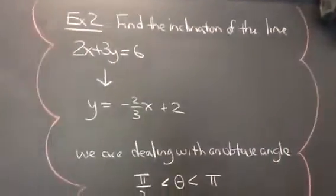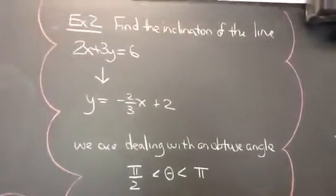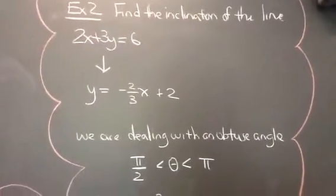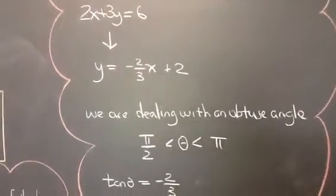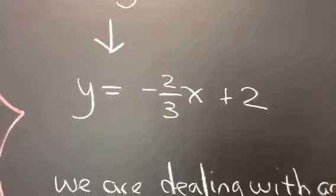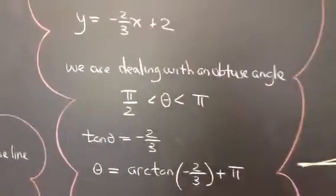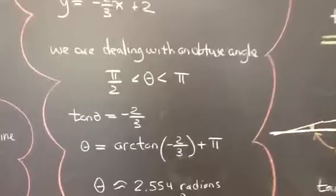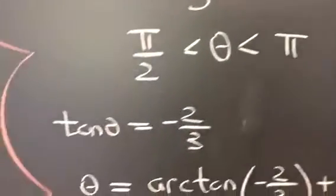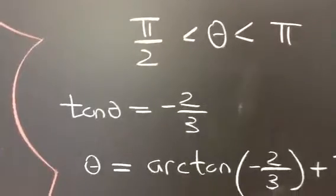Example 2. Find the inclination of the line 2x plus 3y equals 6. Once again, let's get this guy into slope intercept form. The slope is negative 2 thirds and a negative slope indicates an obtuse angle. We are dealing with an obtuse angle, which means theta is between pi over 2 and pi. So the tangent of theta equals negative 2 thirds.